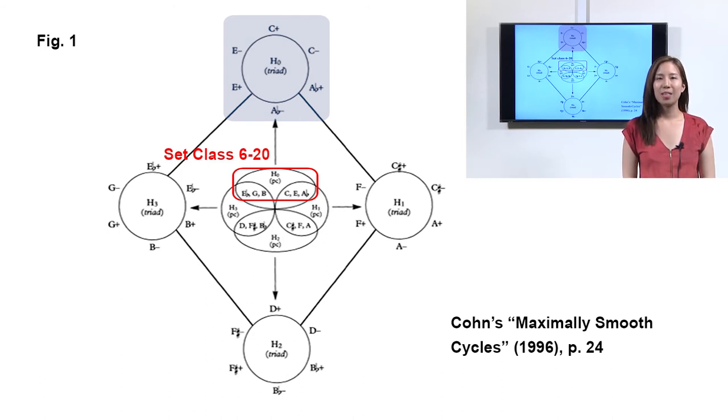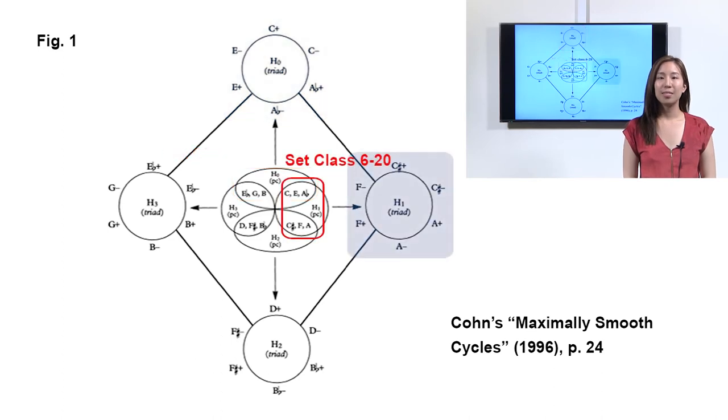The remaining three systems draw on their respective hexatonic collections. For instance, the hexatonic collection C, C-sharp, E, F, A-flat and A supplies the pitch class content for the system to the right.